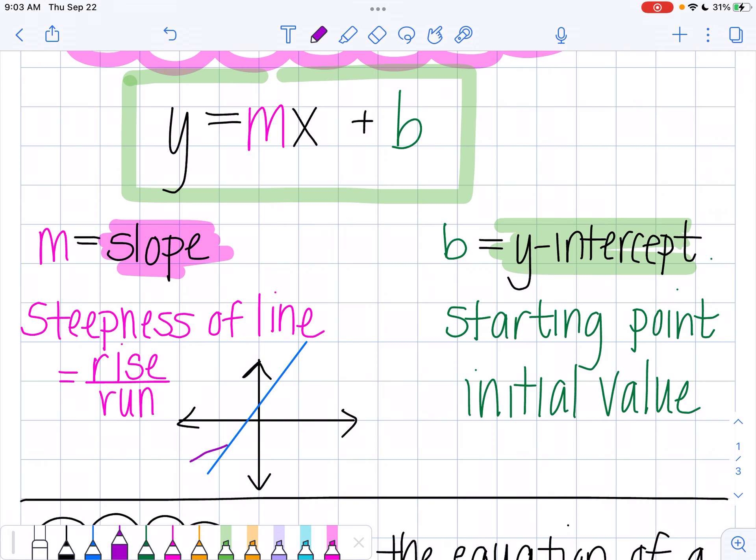You can have a more gradual positive slope. You can have a steep negative slope. You can have a gradual negative slope.